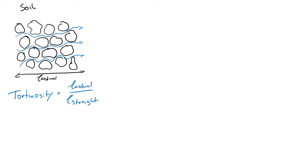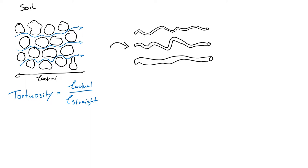To simplify our calculations of how much water flows from left to right in response to a driving gradient, rather than a complex three-dimensional water-filled connected pathway, we use a limited number of tortuous capillaries sufficient to describe flow through soil. For example, we might have a capillary of radius 1, another with radius 2, and another with radius 3, and also assign how many of each are present — say two small ones, three medium-sized ones, and eight large ones.